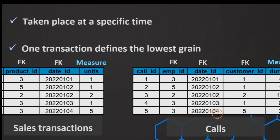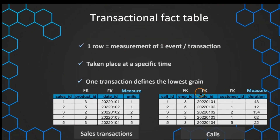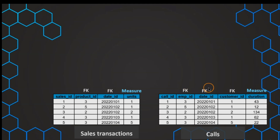The same applies to the calls example, where one call is basically one event. We can have different measurements associated — for example, how long was the call — and of course we have different foreign keys. What is specific about this transactional fact table? We can see that there are many foreign keys, and this is one of its important characteristics.